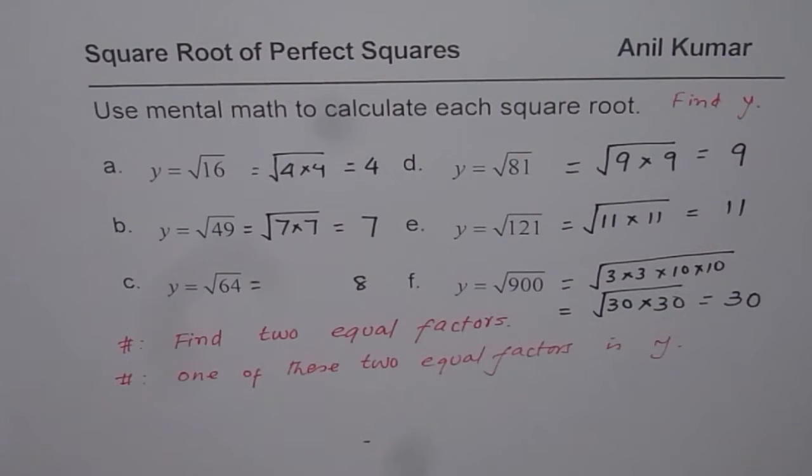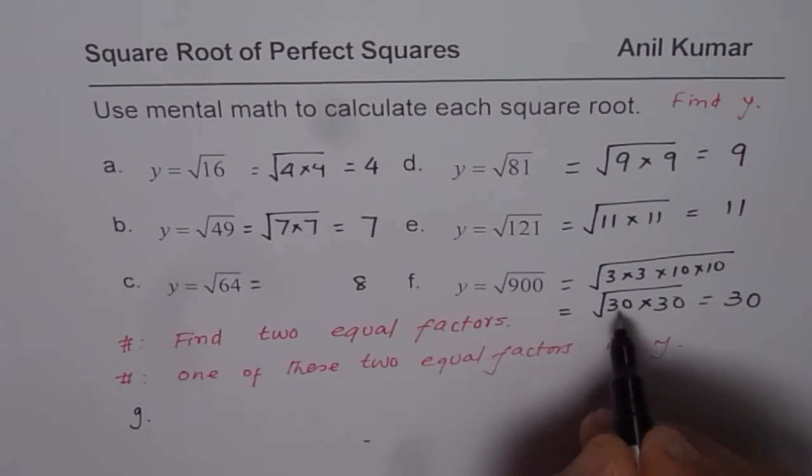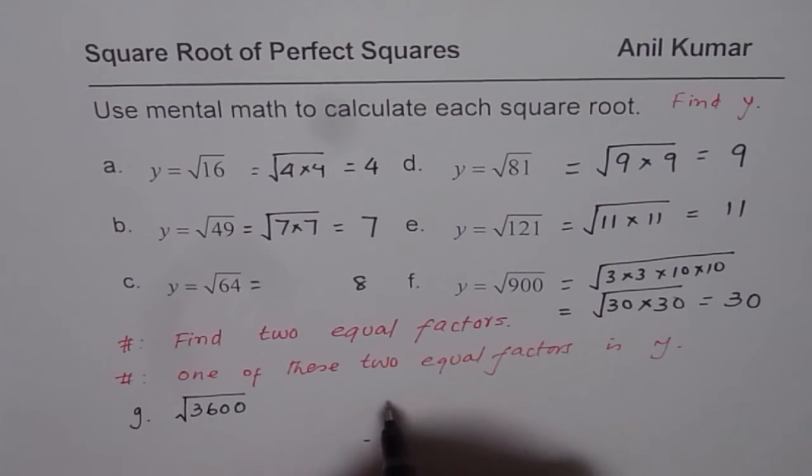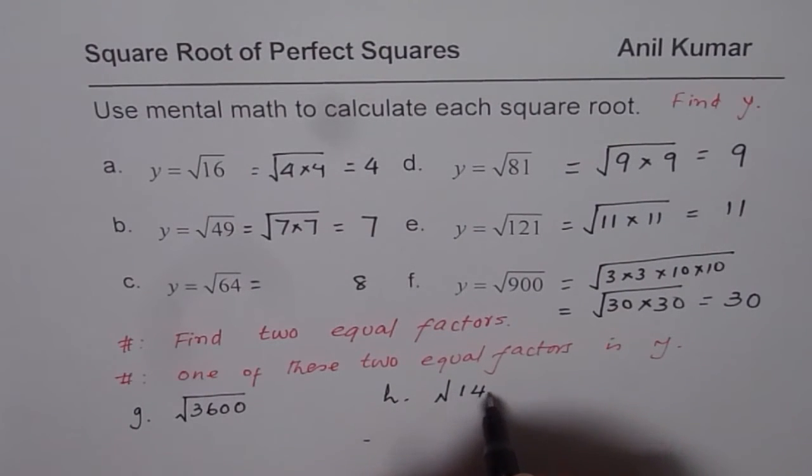So that is how you can calculate square root of numbers. Now here are a few practice questions for you. Find square root of, let us say, 3600, and then the last one is square root of 144.